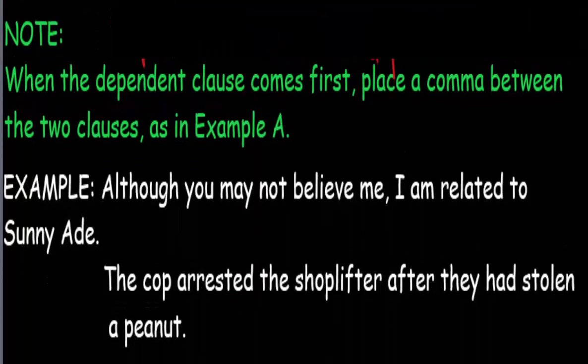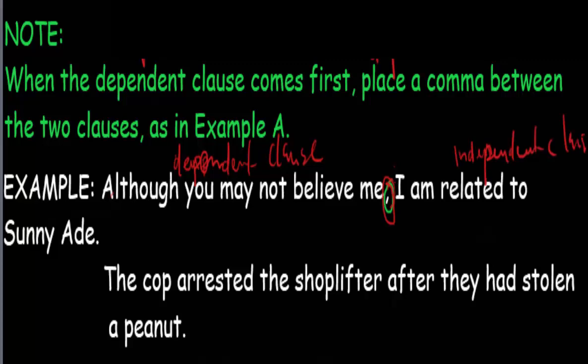So we can have a sentence like this: 'Although you may not believe me, I am related to Sony Aday.' You can see the comma there. 'Although you may not believe me' is the dependent clause, marked off with a comma, and 'I am related to Sony Aday' is the independent clause — it can stand on its own.